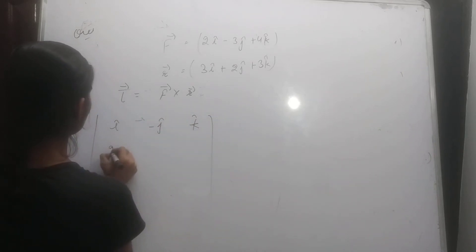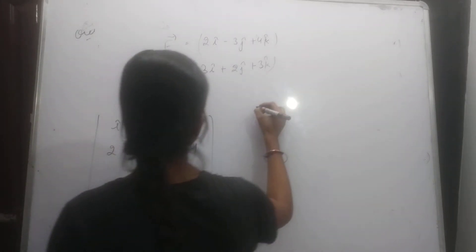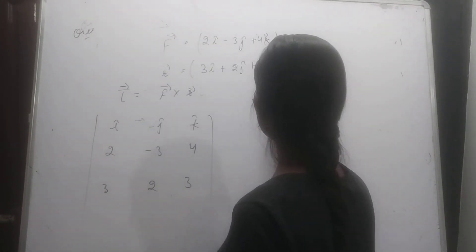F is 2, minus 3, plus 4. Position is 3, 2, and 3.